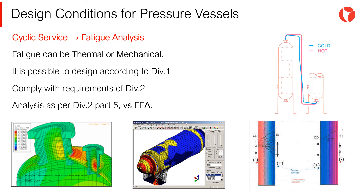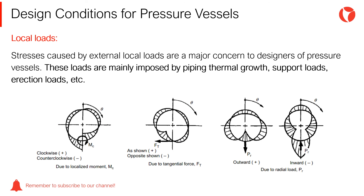Some vessels are subjected to periodic repetitions of mechanical and thermal loads during their service life. When a vessel is subjected to repeated loadings that could cause failure by progressive fracture, the vessel is considered to be in cyclic service. Stresses caused by external local loads — mainly imposed by piping thermal growth, support loads, and erection loads — are a major concern to designers. These stresses must be combined with stresses produced by sustained or permanent loads.